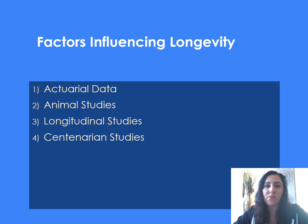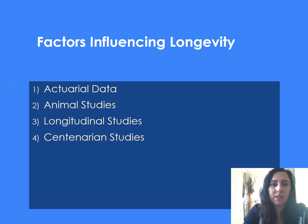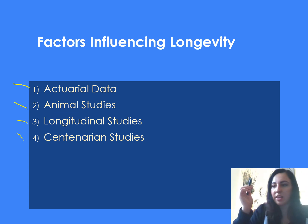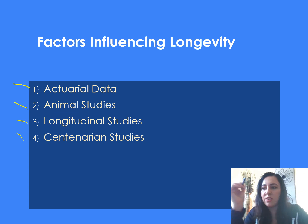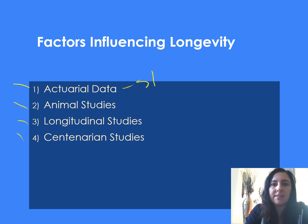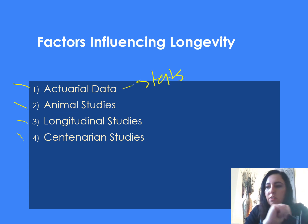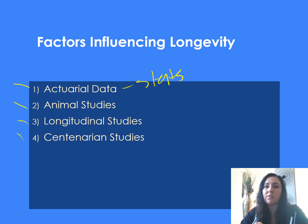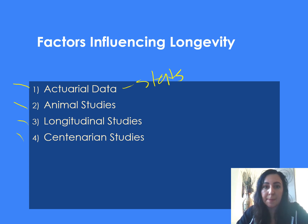Factors influencing longevity can be studied in several ways. Actuarial data involves statistics used to calculate various risk factors known to influence longevity. Animal studies represent a growing area of research where scientists compare humans to our animal counterparts to identify aging-related factors.